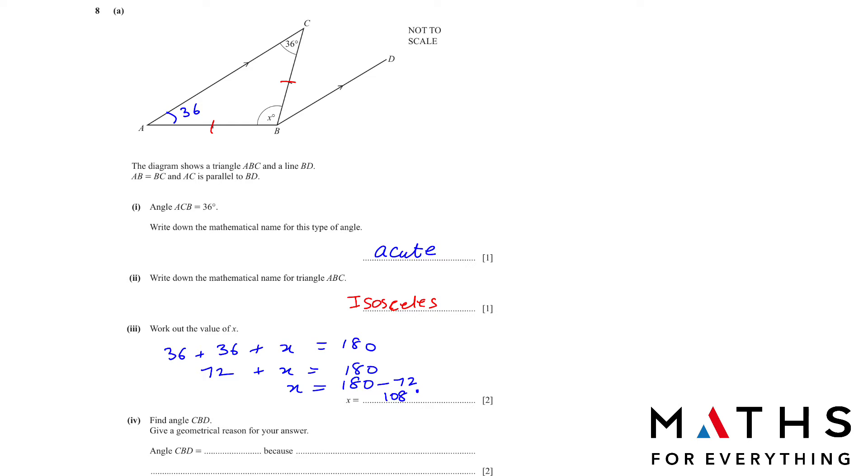Next, we have to find angle CBT and give a geometrical reason for your answer. We want to find CBT. If you notice here, this line is parallel to this line. This is making sort of a Z. Because the two lines are parallel, angle C will be equal to this angle B. So CBT is 36 and the reason is whenever it makes a Z, that's an alternate angle. You need to know your corresponding angles and alternate angles.